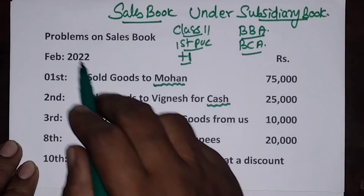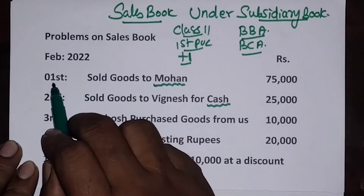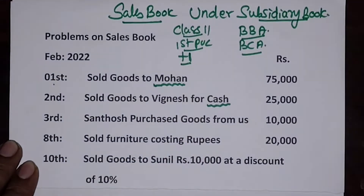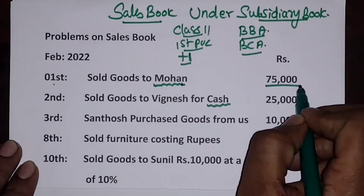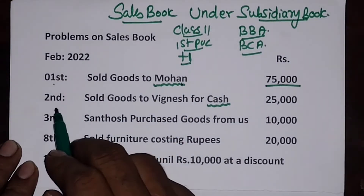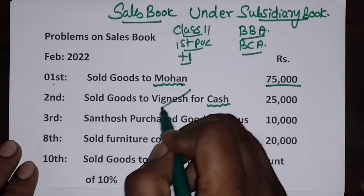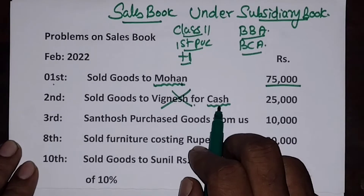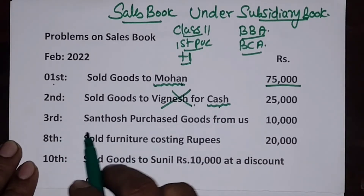Problems on the sales book: 1st February 2022 — sold goods to Mohan, ₹75,000. This is a credit sale. On 2nd — sold goods to Vignesh for cash. This won't appear in the sales book because it is a cash transaction.